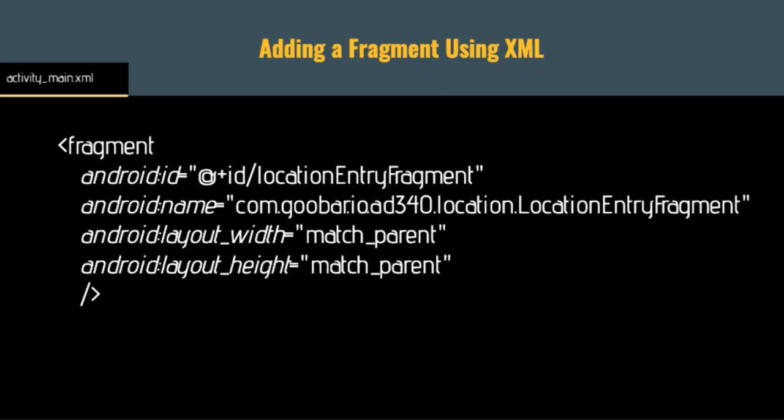To add a fragment to a screen, there are a couple of options. We can do it directly in XML. In our activity_main XML, we could add a fragment element, give it an ID, specify the name attribute pointing to the fragment class that should be instantiated, and give it a width and height. This would add a location entry fragment to our activity main XML file.